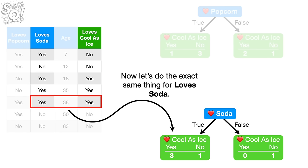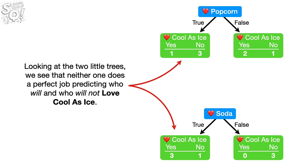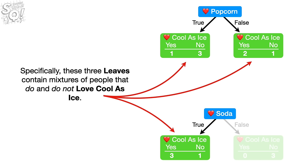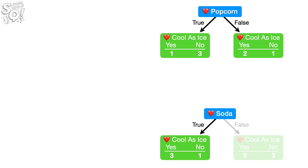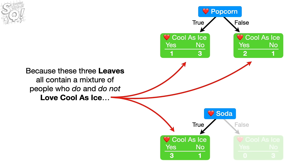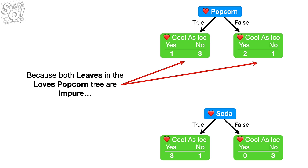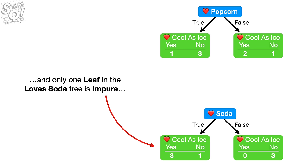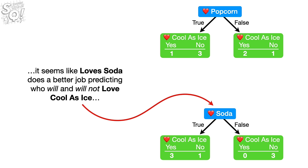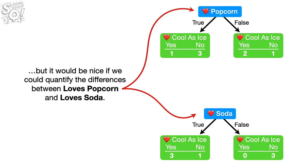Now let's do the exact same thing for Loves Soda. Looking at the two little trees, we see that neither one does a perfect job predicting who will and who will not love Cool as Ice. Specifically, three leaves contain mixtures of people that do and do not love Cool as Ice — they are called impure. In contrast, one leaf only contains people who do not love Cool as Ice. Because both leaves in the Loves Popcorn tree are impure and only one leaf in the Loves Soda tree is impure, it seems like Loves Soda does a better job predicting who will and who will not love Cool as Ice.